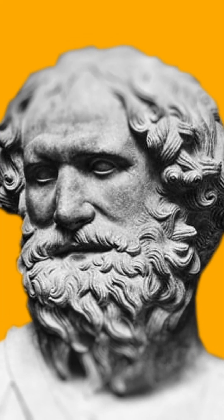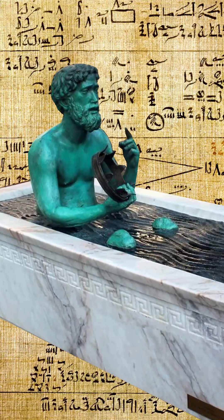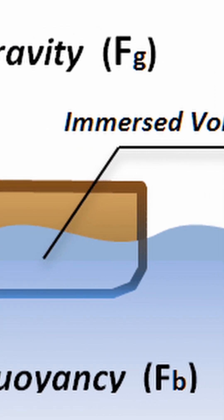Archimedes' principle was famously discovered by him after he successfully calculated the purity of a golden crown. This principle led to several applications such as the designing of ships.